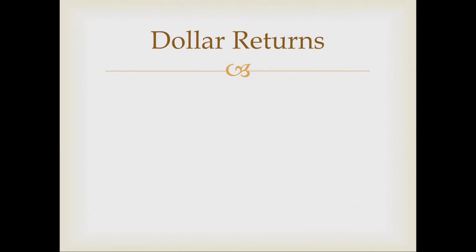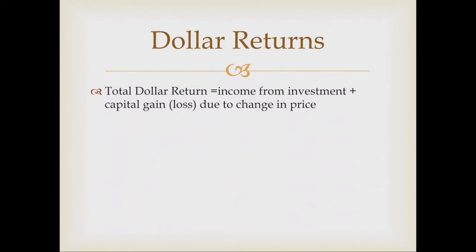The first thing we will discuss is how to calculate returns. The first type of return is a dollar return. A dollar return can be broken down into income received from the investment — dividends if you're looking at stocks, coupon payments if you're looking at bonds — and then any capital gain or capital loss due to a price change. That is the change in the value of the underlying security. We consider the capital gain or loss even if we do not actually sell the security.